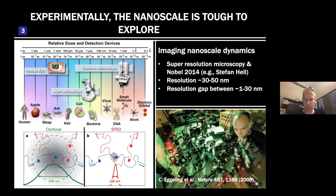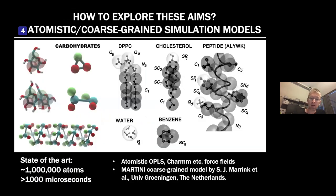Quite often in these structural techniques you have conditions which can be used to debate the quality of your data — for example, crystallization. Everybody knows the structures you get after crystallization might be quite different from the native ones. Cryo-EM is better, but the technology is still improving and it is very difficult to get high-resolution structures identifying every atom in detail. The point is that we have a gap in terms of both spatial resolution and time resolution that experiments are not able to cover — and that's the reason why we are doing atomistic and coarse-grain simulations.